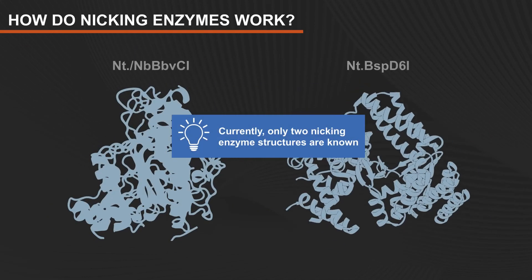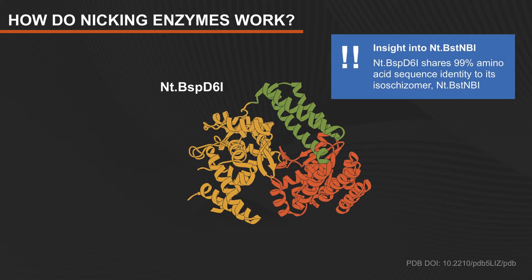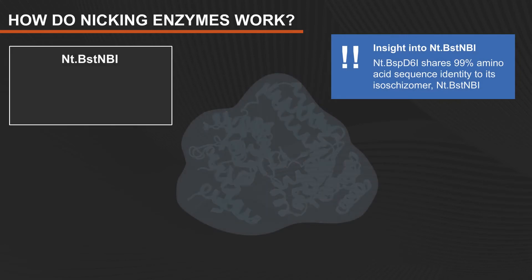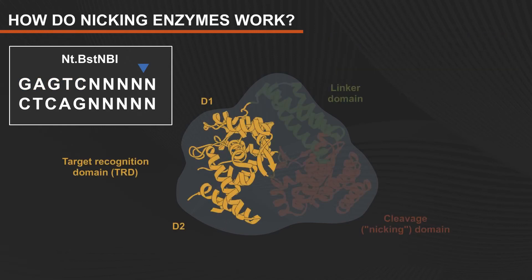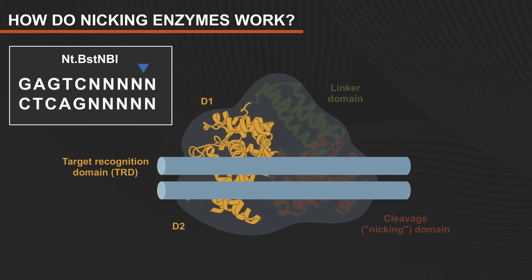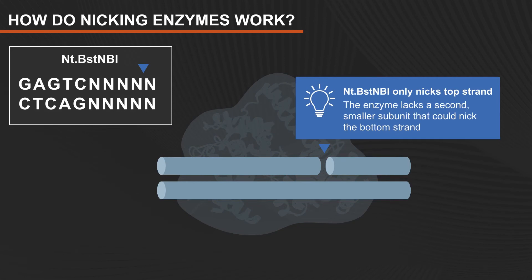Currently, only two nicking enzyme structures are known. Structural work on NT-BSP-D6-1 indicates that NT-BSTNB1 recognizes the double-stranded DNA sequence GAGTC and nicks downstream at position N4. The target recognition domain, or TRD, binds to the specific DNA sequence and activates its catalytic center, resulting in the nicking of only the top strand.